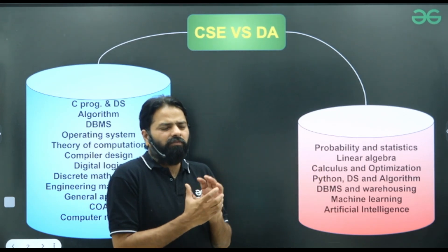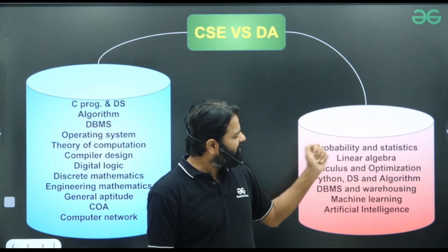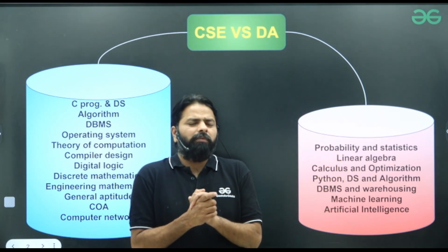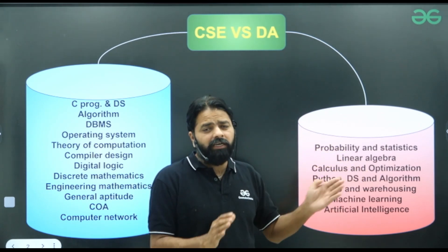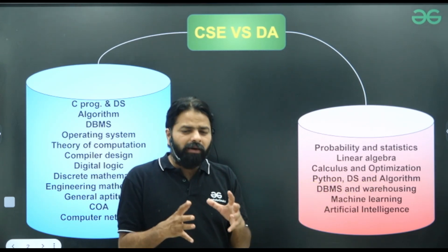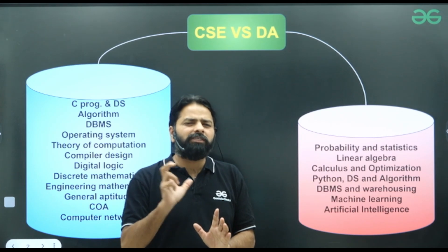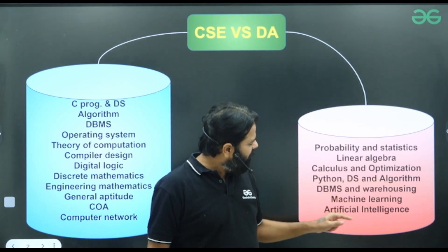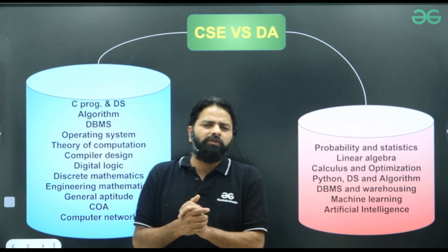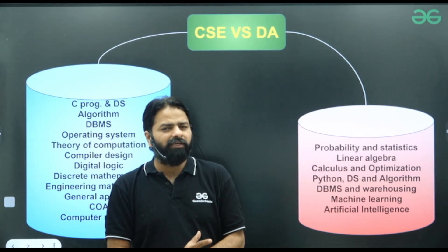GATE DA is more related to maths, data science, AI, and machine learning concepts. If you look at the subjects — probability and statistics, linear algebra, calculus and optimization — these give you nearly 40 marks weightage from these first three mathematical topics. Python, DS, and algorithms also have good weightage. Covering up to Python, DS, and algorithms gives you more than 50 marks weightage. DBMS, data warehousing, machine learning, and AI have 20 to 30 marks weightage, and aptitude has 15 marks.